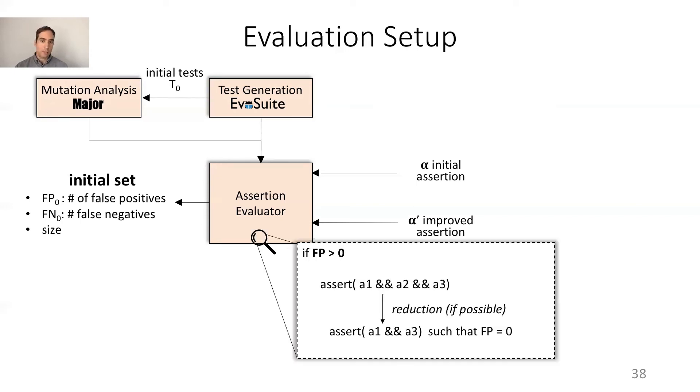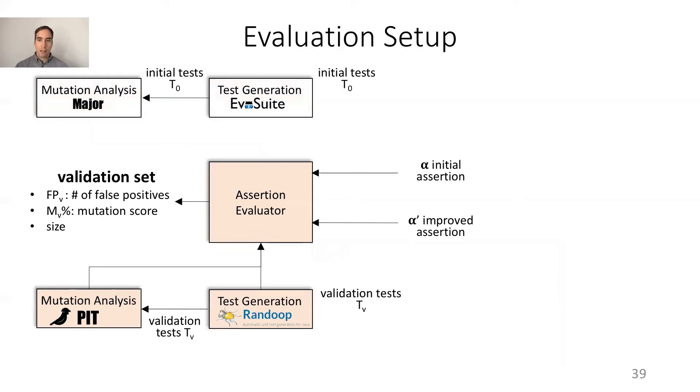We used the initial sets of mutations and tests. If the assertion has false positives, to have a meaningful comparison with J-Assert that returns assertions with zero false positives, we reduced the assertion until it has zero false positives, then we counted for false negatives and size. Then we obtained a validation set of test cases and mutations using Randoop and Pit. We want to see how well the initial and improved assertions performed with unseen test cases and mutations.